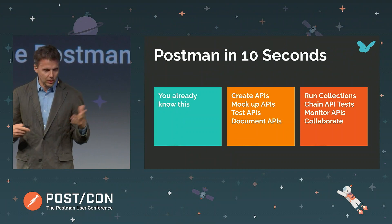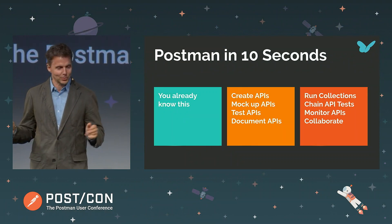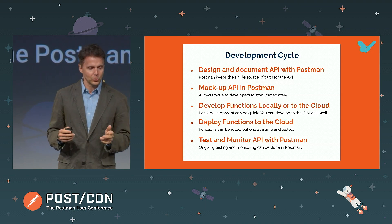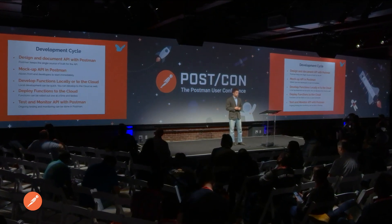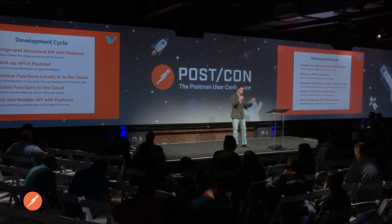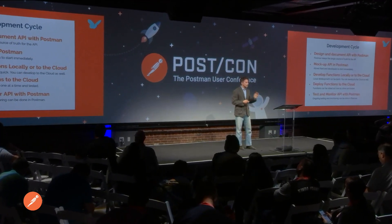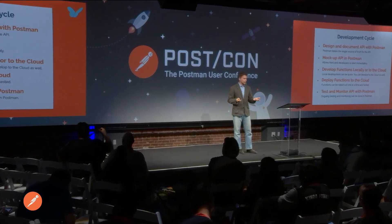Postman and serverless computing work great together. The process flow is: you design and document your API in Postman, mock up your API so people can test the calls and the front-end developer can start immediately. Then you start developing your functions locally — in JavaScript you can use Node — or deploy them to the cloud. One by one you hook them up to your API, and on an ongoing basis you test and monitor using Postman.